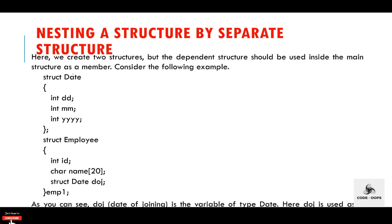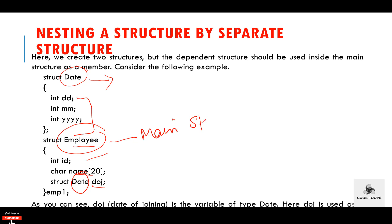For example, struct date — struct is the keyword and date is the name of the structure. Then struct employee — employee is the name of the structure, and the employee structure has three data members: id, name, and date of joining. In this case we have created two structures: date and employee. Date is the dependent structure. Date of joining is a variable of type date, and DOJ is used as a member in the employee structure. In this way, we can use the date structure in many structures.